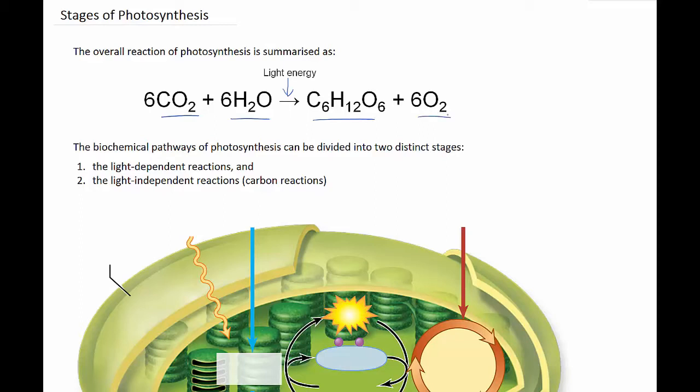Photosynthesis is actually a biochemical pathway that occurs in a series of steps, with each step in the pathway being catalyzed by a specific enzyme. The biochemical pathways of photosynthesis can be divided into two distinct stages: the light-dependent reactions and the light-independent reactions.